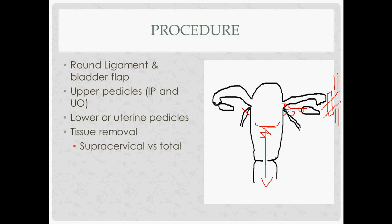If leaving the ovaries inside, make a small hole in the peritoneum and cut the utero-ovarian ligament and the fallopian tubes.